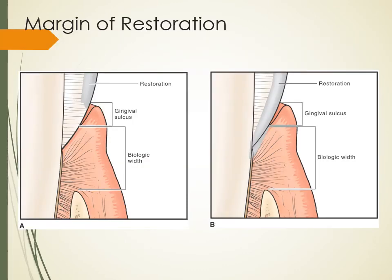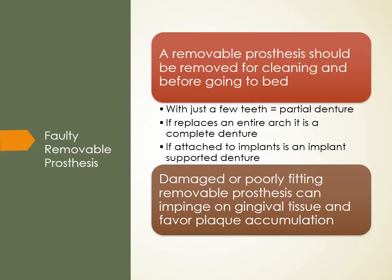If the margin of the restoration respects the biologic width, that's not a problem. But if the restoration comes too close to the bone, it interferes with the biologic width and that whole section moves down. Faulty removable prostheses should be removed for cleaning and before bed. A partial denture replaces just a few teeth; a complete denture replaces the entire arch. An implant-supported denture — slang term 'all-on-four' — typically uses four implants, though patients should understand that means four on top and four on bottom.